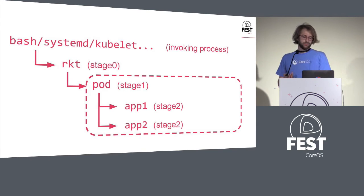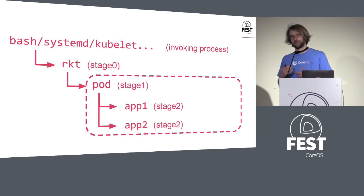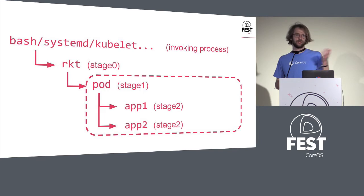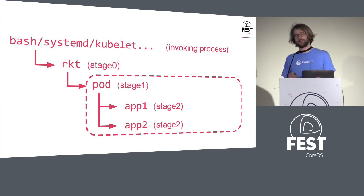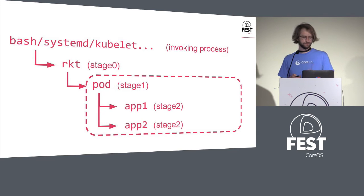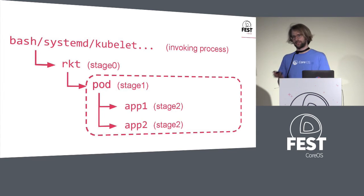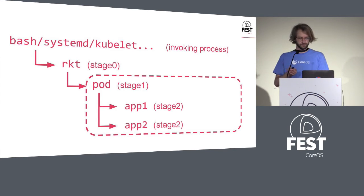The idea of separating these stages is: with stage zero you can provide a consistent experience to the user or the system you're integrating with. By abstracting stage one out, we can swap in different stage ones and get different isolation primitives. By having a consistent expectation for stage two — what the apps are going to be running in — you know your apps are going to work no matter what stage one is being used.